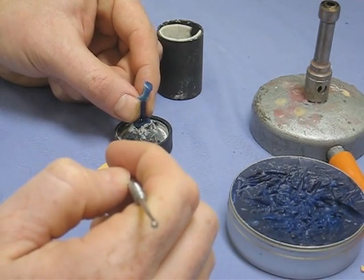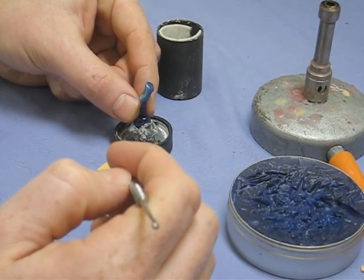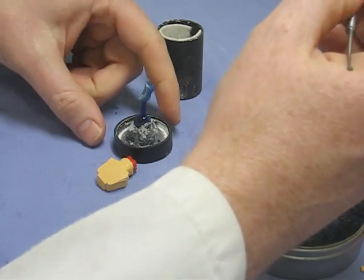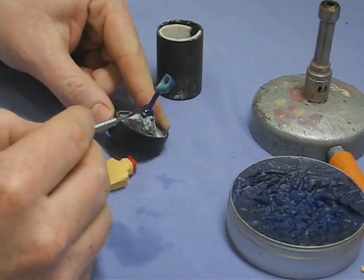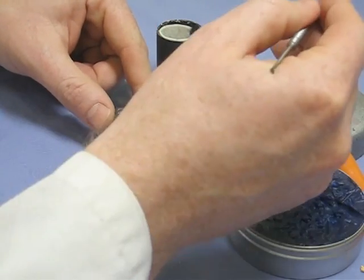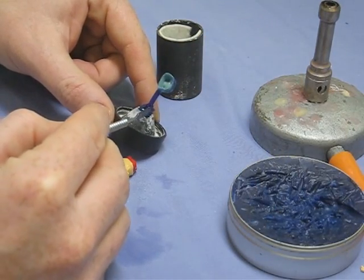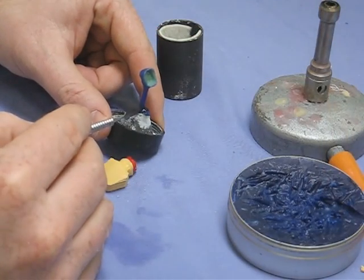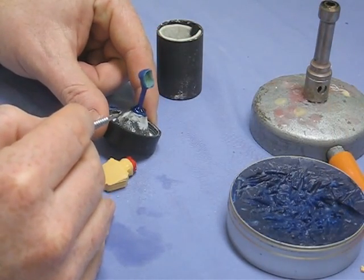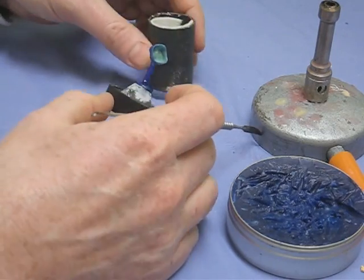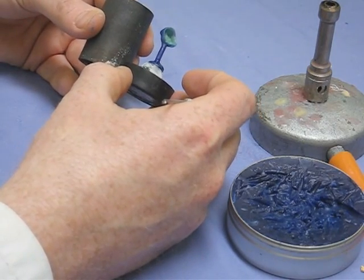If you imagine the gold coming rushing up the sprue, it's got to displace the air that's already in the mould and the refractory investment is quite porous but only to an extent so we need the pattern to be about five millimetres from the end so there's enough material to be strong but not enough that the air can't seep through it quickly. So it's a bit of a balance.